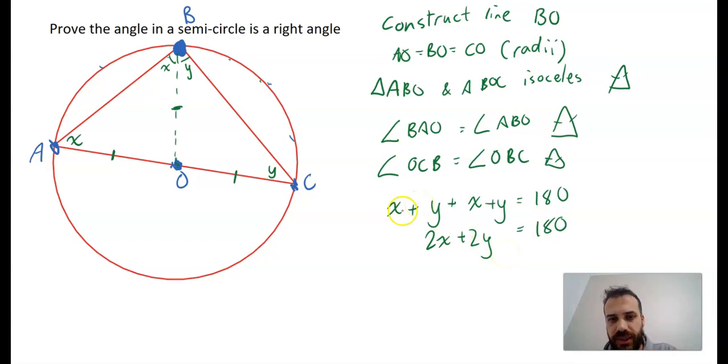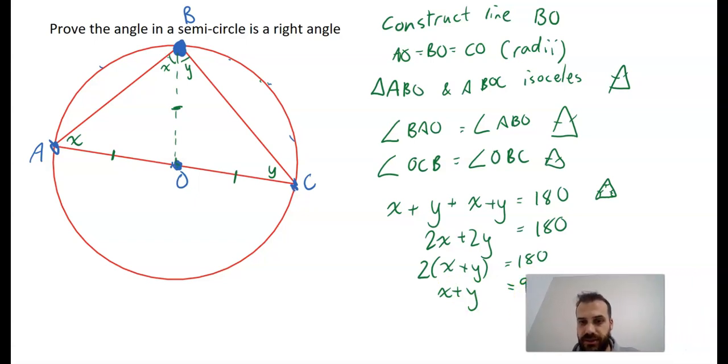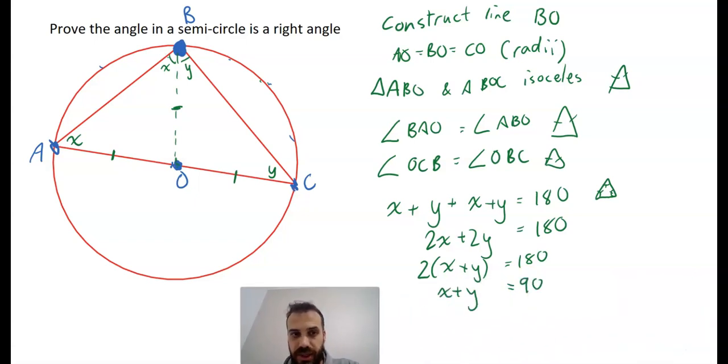Now I should just slow down a little bit. So the reason this line exists is because the internal angles of a triangle add up to 180. From here, 2X plus 2Y equals 180, which means that 2 times X plus Y equals 180. And I can divide both sides by 2 to get X plus Y equals 90.